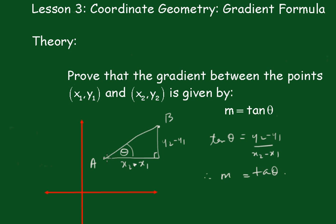So if we continue this line down here so it strikes the x-axis, by simple geometry we can see that the angle this line makes with the positive direction of the x-axis is this angle θ.